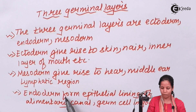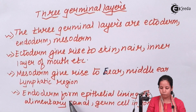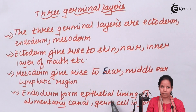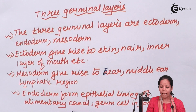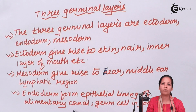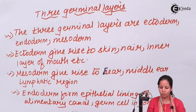Finally, the endoderm. Endoderm forms the epithelial lining of the alimentary canal. This lining basically covers the food pipe region, the esophagus or peristaltic movement region, the small intestine region, and the stomach cavity, etc.